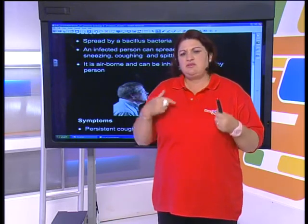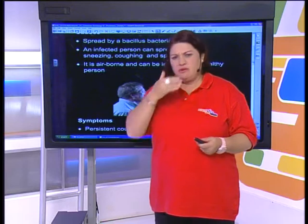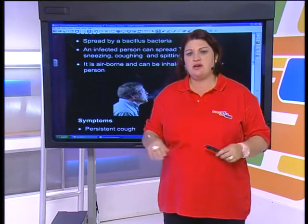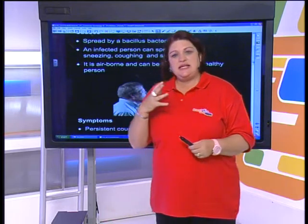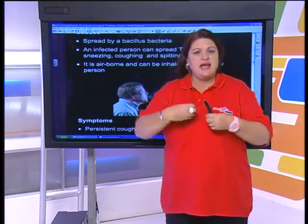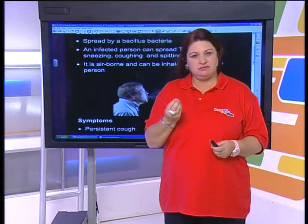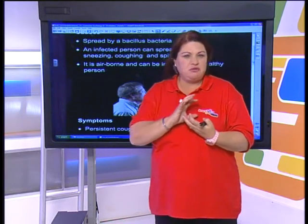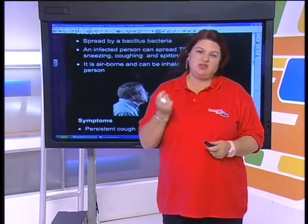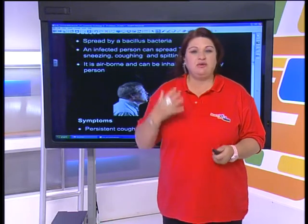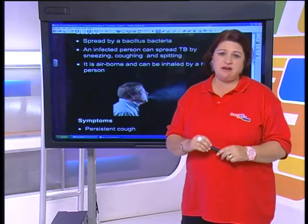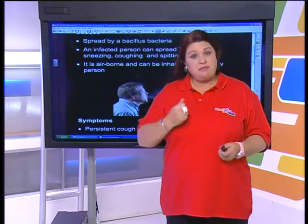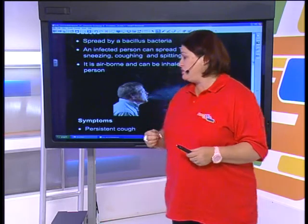Prevention includes putting your hand in front of your mouth when you sneeze, or using a handkerchief. If your immune system is healthy, the TB bacteria is contained — almost like a capsule forms around it and it doesn't spread. But if you have a low immune system — which is why TB is linked to HIV and AIDS — it's much easier for the bacteria to do damage in your lungs.